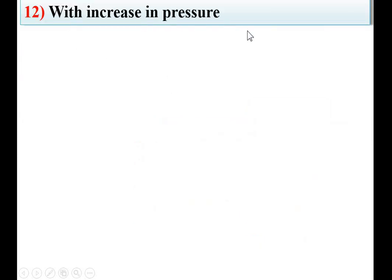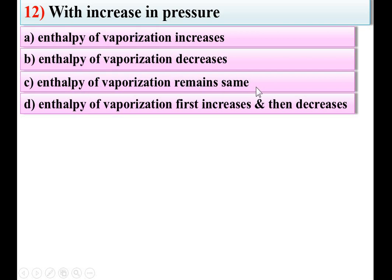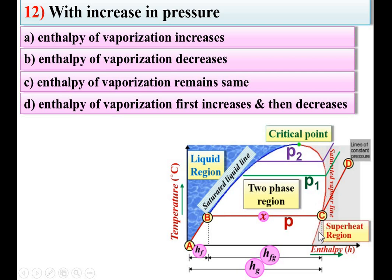Next: with increase in pressure, enthalpy of vaporization option increases, decreases, remains same, or first increases then decreases. Consider this figure. The B-to-C portion is HFG, the enthalpy of vaporization. With pressures P, P1, P2 in ascending order, if you increase the pressure, HFG decreases gradually and at the critical point it becomes 0. So enthalpy of vaporization decreases is the right answer.